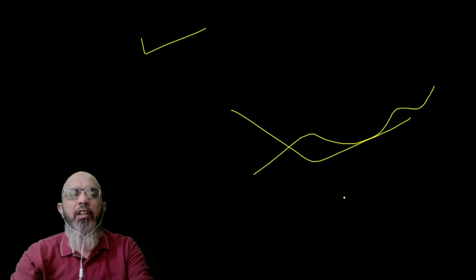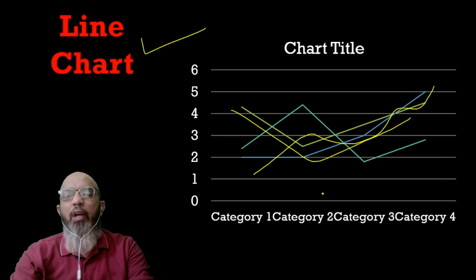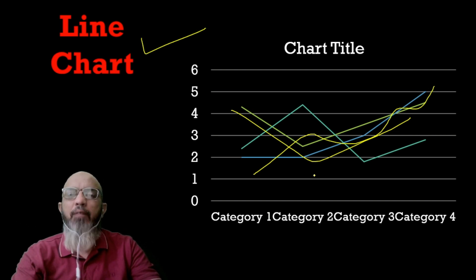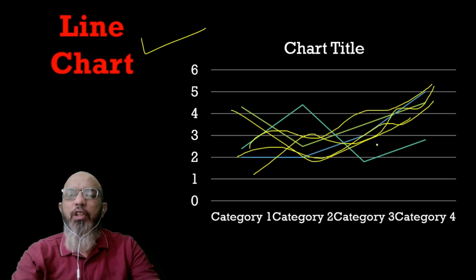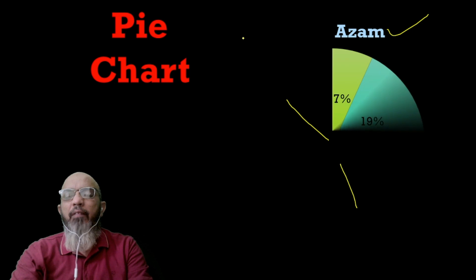There is another type of graph — the line graph. While you are watching a match, especially a cricket match, you see how a team's average score is changing and how much the second team is scoring. That chart looks a certain way on your TV screen, and such charts are called line charts.